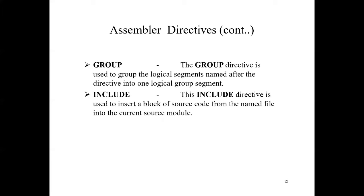Next is INCLUDE (Include Source Code from File). The INCLUDE directive is used to insert a block of source code from a named file into the current source module. It is convenient to keep all data and frequently used macros in a header file or include file. The general format is: 'INCLUDE file_path_specification'. If the full file path is not mentioned, the assembler uses the current directory. Example: 'INCLUDE control.temp' — this informs the assembler to include all statements in the file 'control.temp' from the current directory.